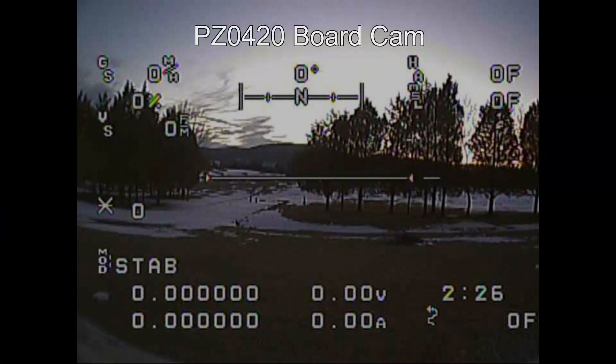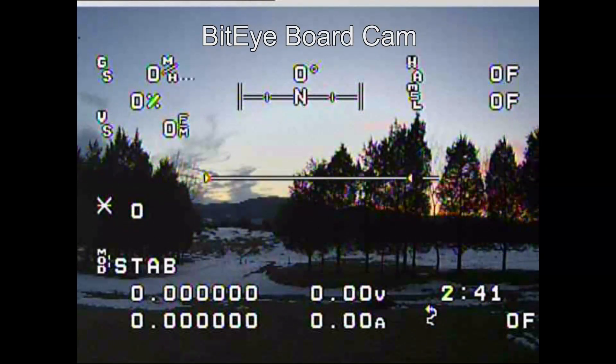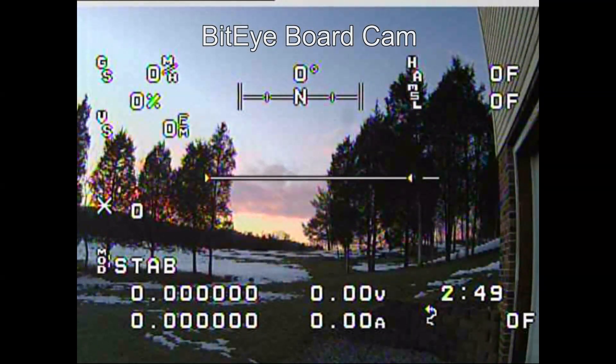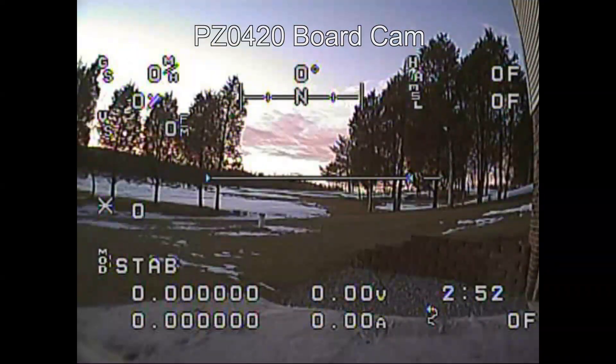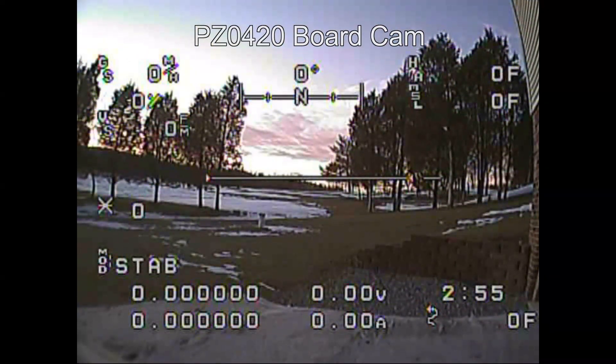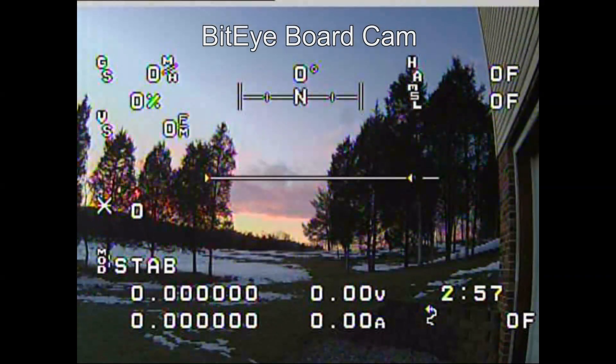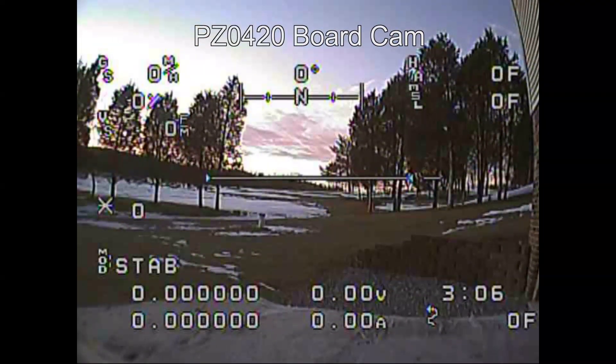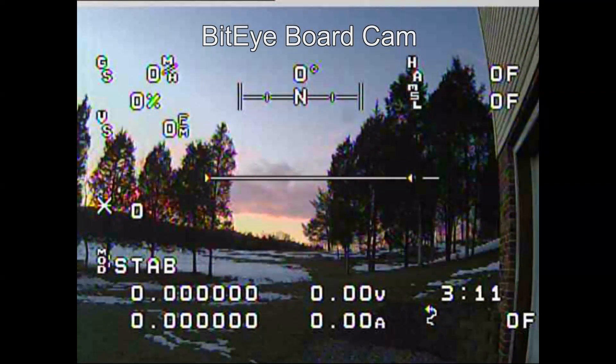So here's what it looks like through the OSD through the goggles with the FPV cameras. So this is the PZ0420. This is the BitEye looking at the same scene. And you can see the colors are really good on the BitEye swinging around here away from the sun. You can still see pretty good colors. Not too bad. And now here's the PZ0420. Maybe a little brighter but not quite as colorful. Back to the BitEye, color is good and you can still see pretty good even at sunset. There's the PZ0420 again. Not bad color but not as good as the BitEye which you can see here.